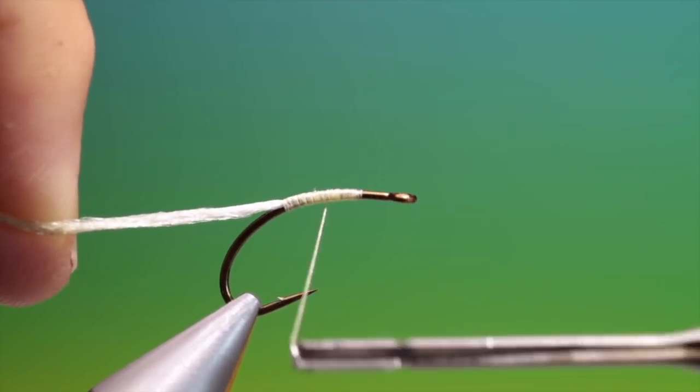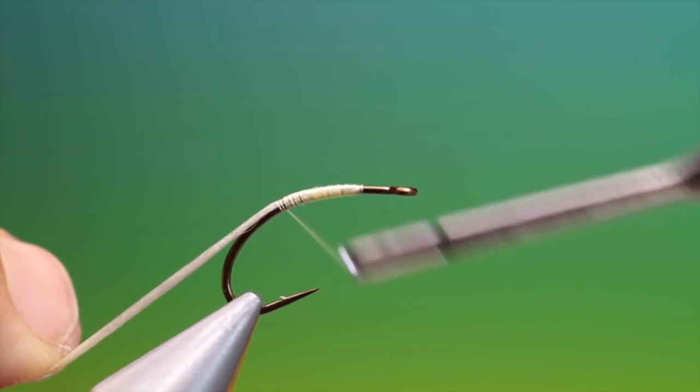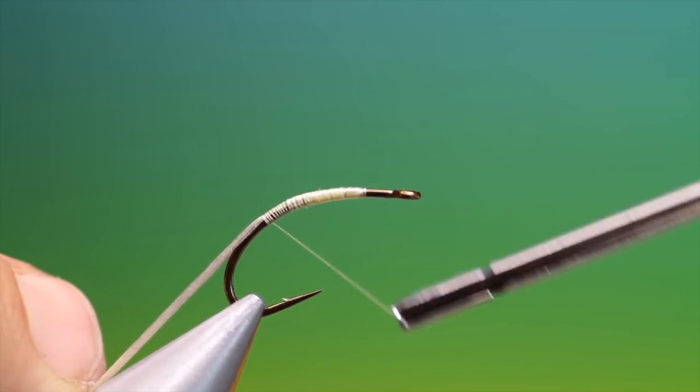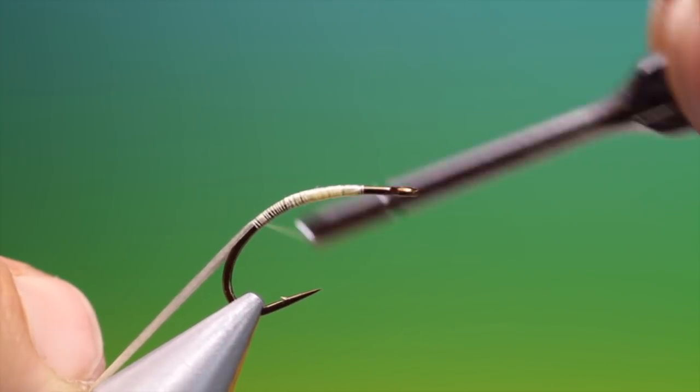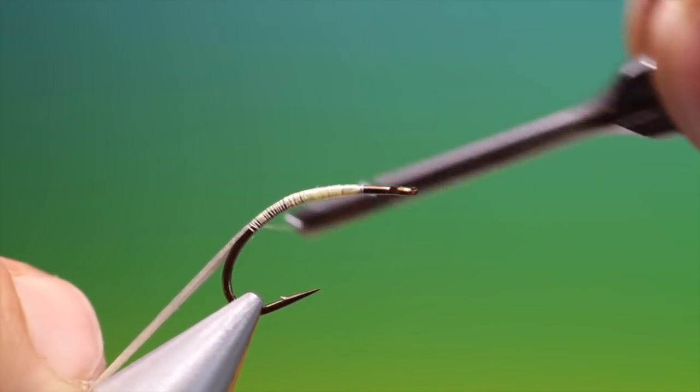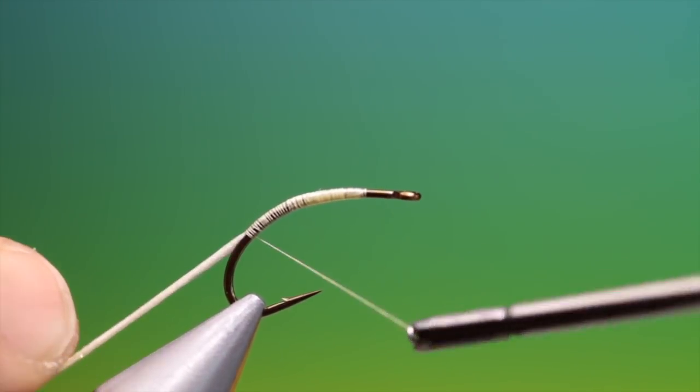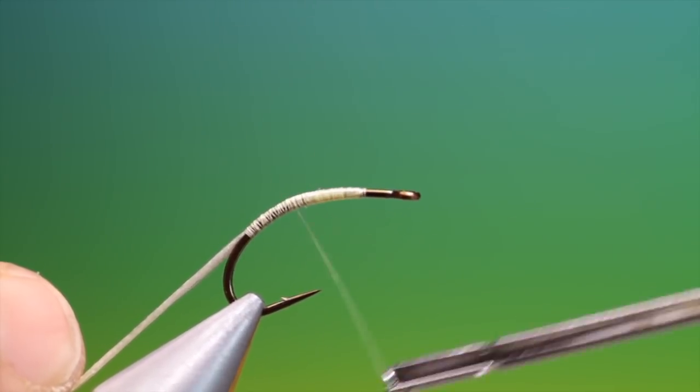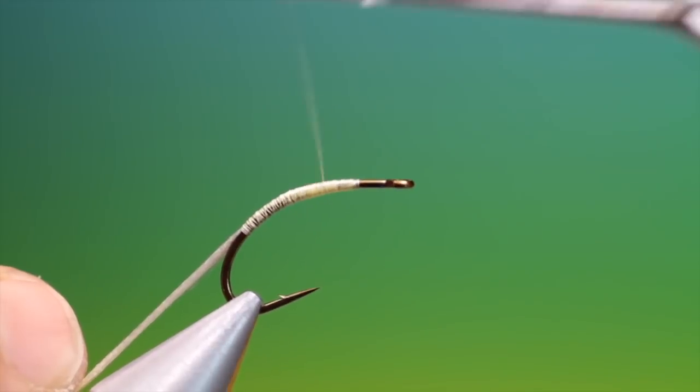Again just reinforcing that taper and then we can go down. Now in order to get this to fish in the correct manner we want the hook to work as a keel for us so we don't want to go all the way down. That's enough and then what we do is we go back up, open spiral there and then we tighten up our turns again to create the taper.